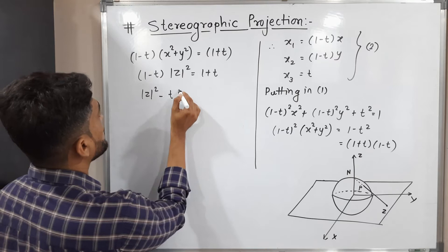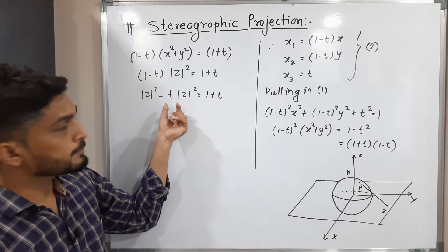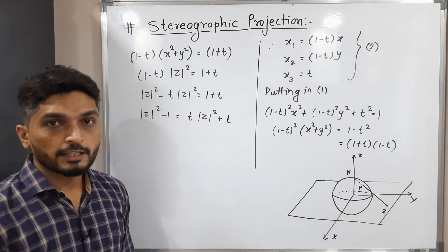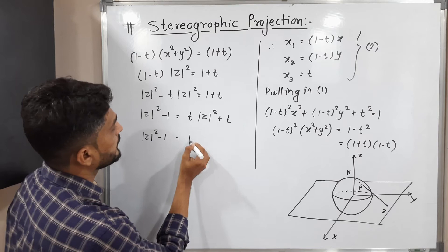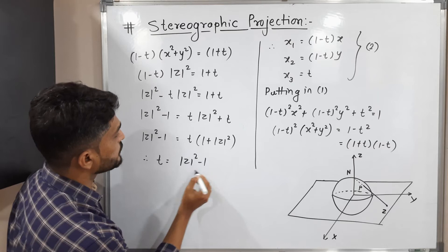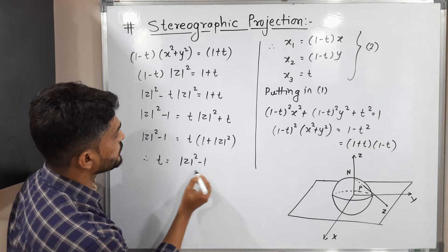Expanding: |z|² − t|z|² = 1 + t. Rearranging the t terms to one side: |z|² − 1 = t + t|z|² = t(1 + |z|²). Therefore the value of t is (|z|² − 1) / (1 + |z|²). Now we substitute this value of t into equation number two to find x₁, x₂, x₃.